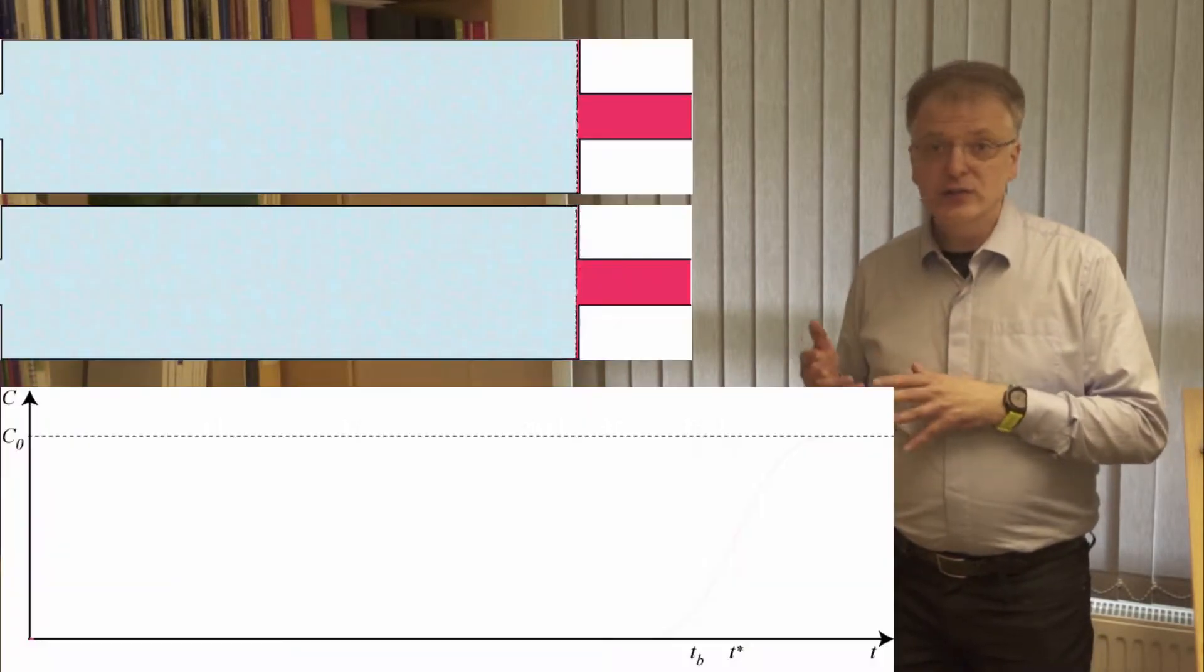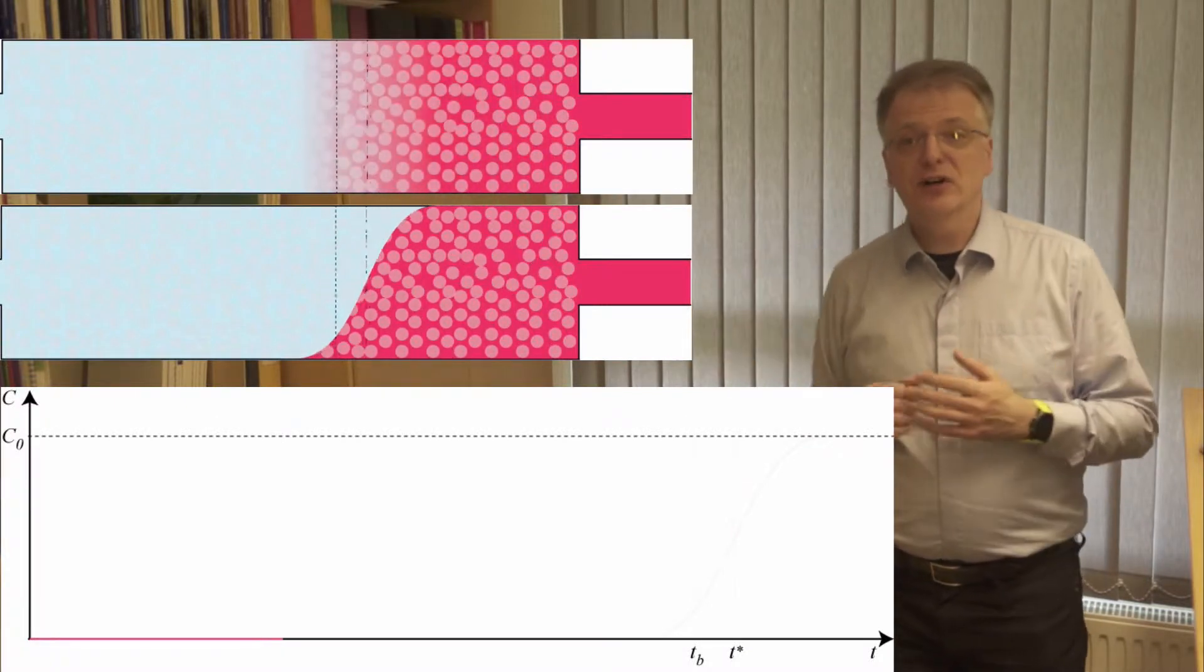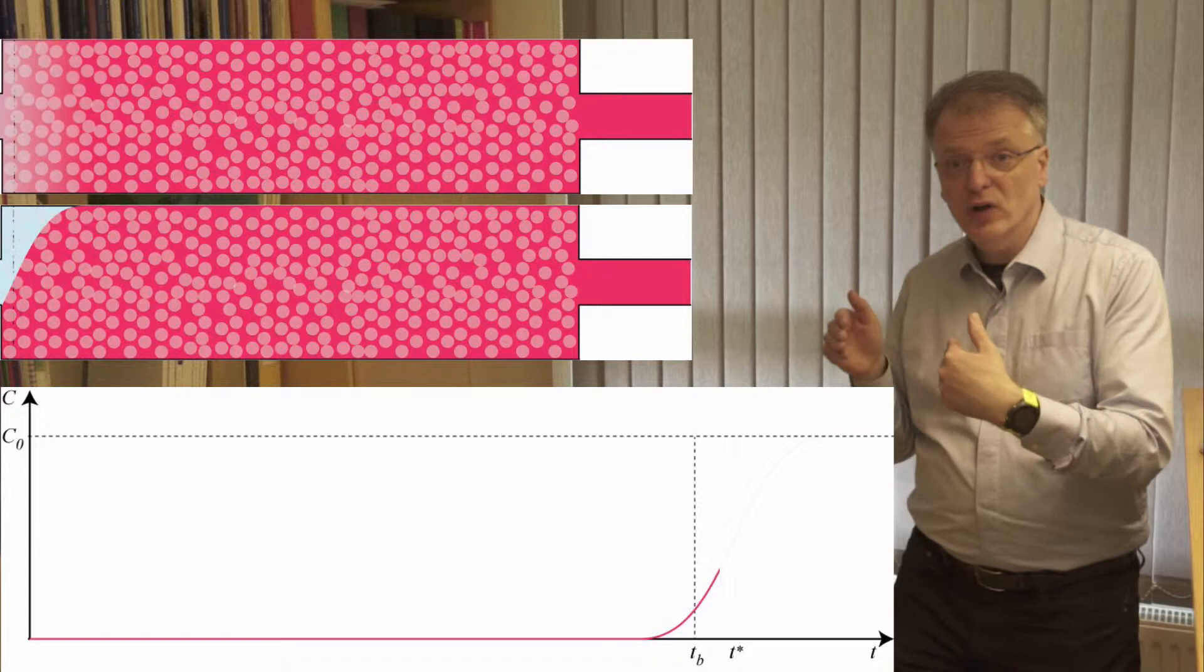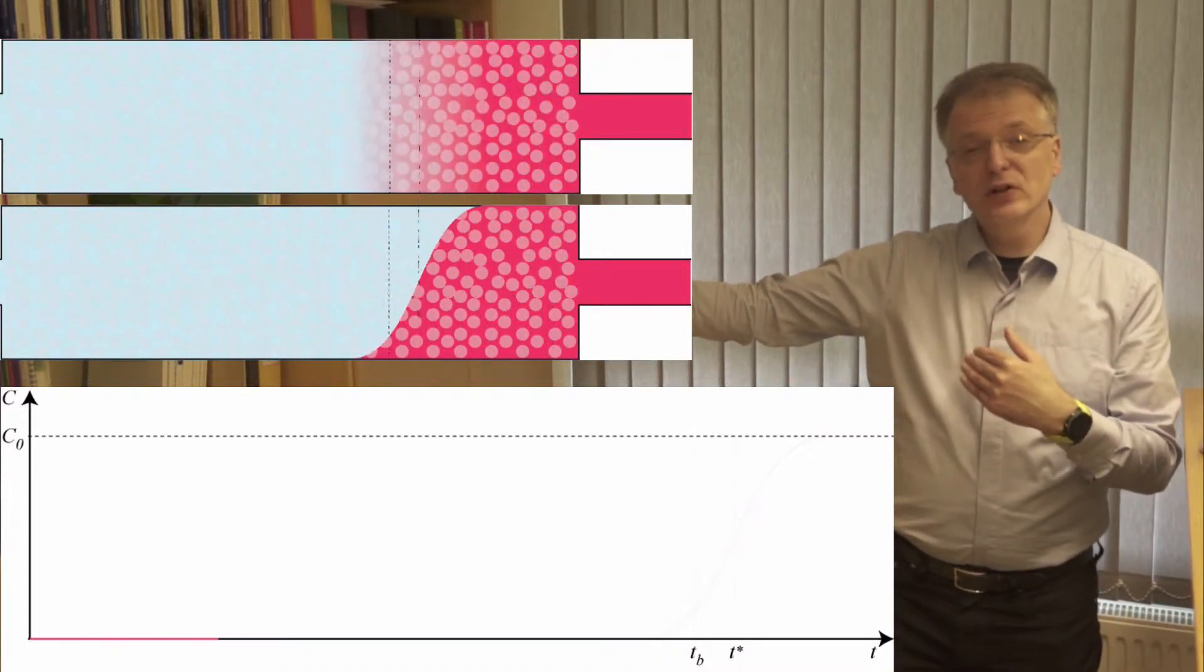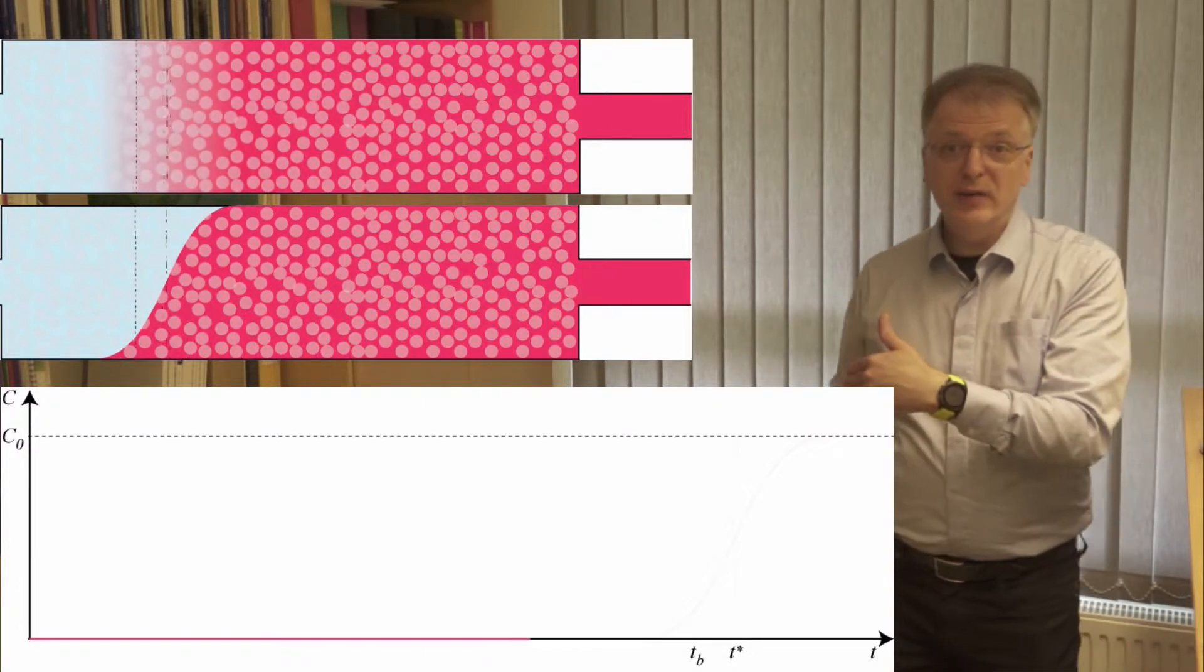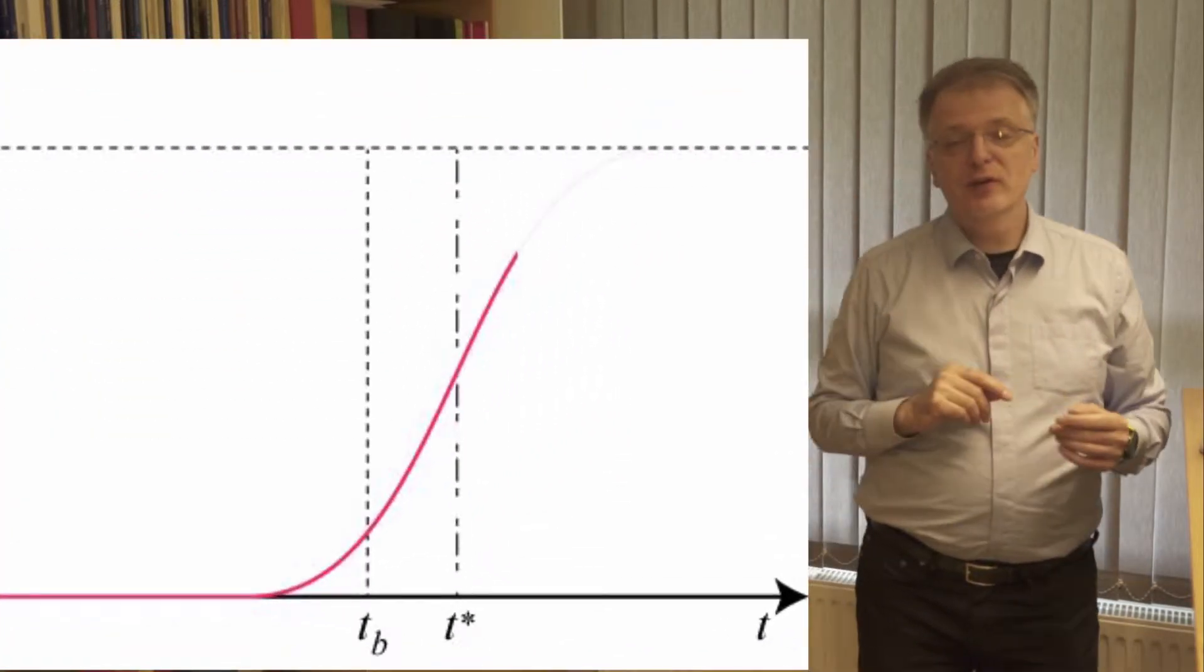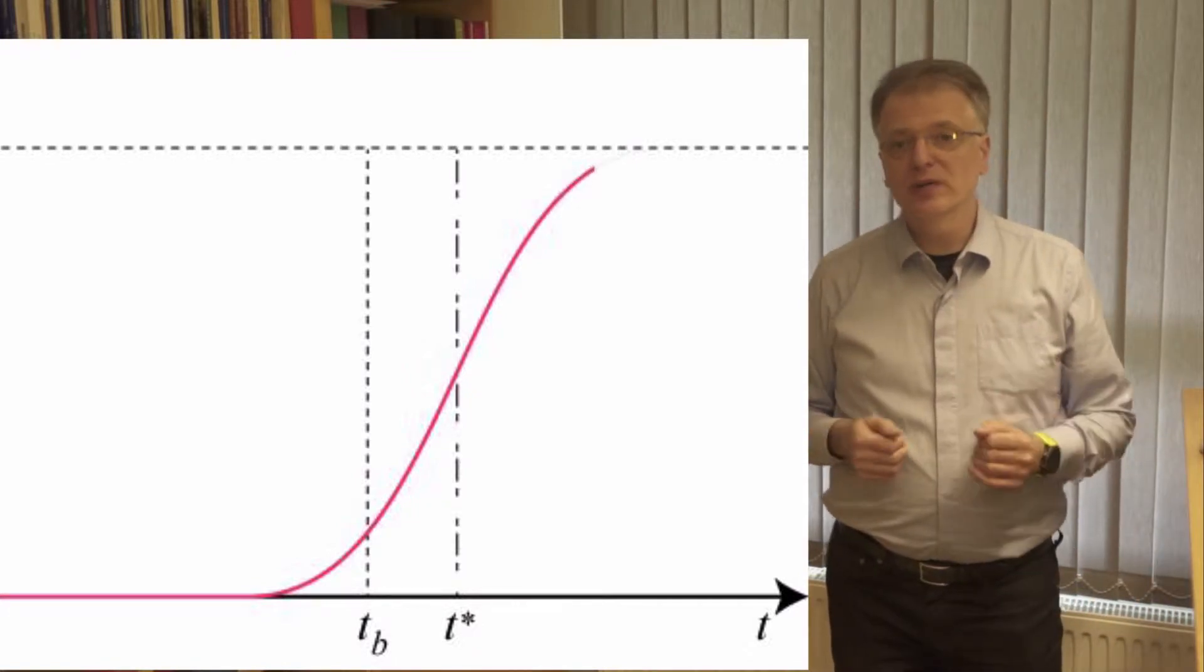The breakthrough curve is a graph showing the concentration in the outlet as a function of time. In the two upper animations I have drawn two vertical lines that move along the column. The first, the frontmost vertical line at a low concentration, and the second where we have a higher concentration. When the first vertical line reaches the outlet, that's when we have our breakpoint, and the second vertical line reaches the outlet at the time we call T-star.